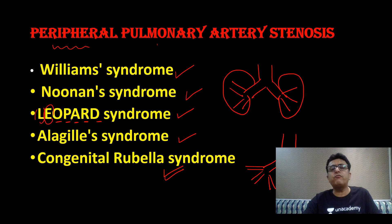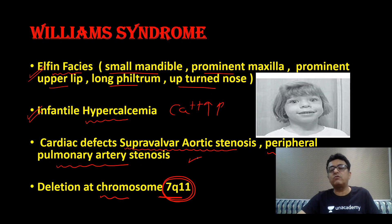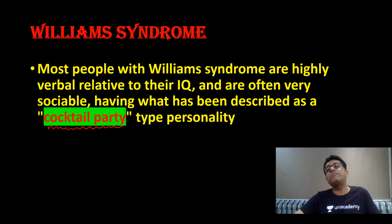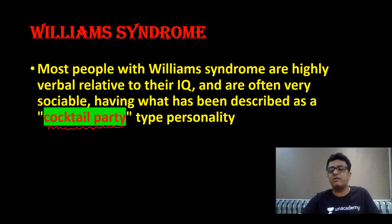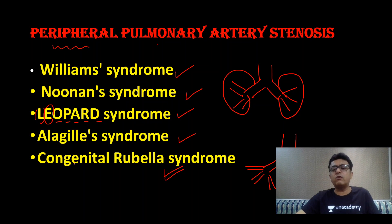This is Williams syndrome — it takes only three to four minutes to cover these points. They have elfin facies, infantile hypercalcemia, supravalvular aortic stenosis and peripheral pulmonary artery stenosis, deletion at 7q11. They are cocktail party personality — very social, easily mixable. These are the syndromes associated with peripheral pulmonary artery stenosis. This is about Williams syndrome.